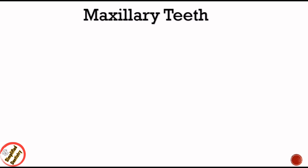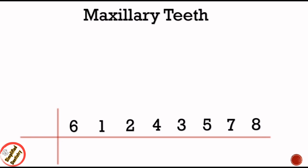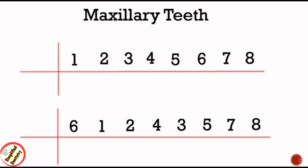For permanent teeth it's easier to remember the eruption sequence separately for maxillary and mandibular teeth. The eruption sequence in maxillary teeth is 6-1-2-4-3-5-7-8. Normally we write the notation as 1-2-3-4-5-6-7-8; to remember the eruption sequence, just put 6 at first and interchange the position of 3 and 4. Always remember that the upper and lower first molar (6) is the first tooth to erupt in permanent dentition.